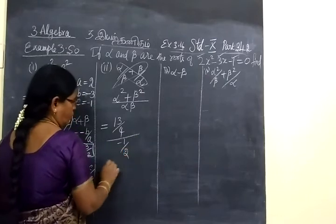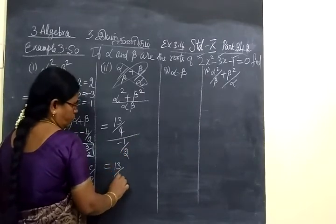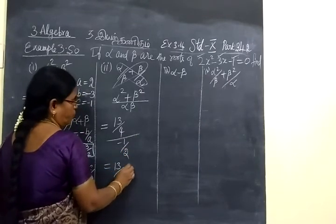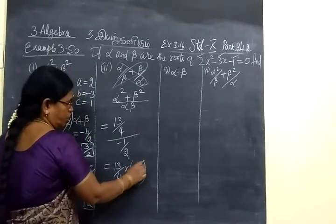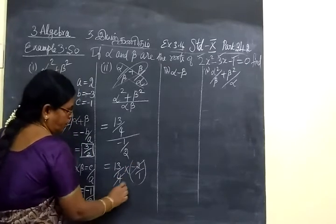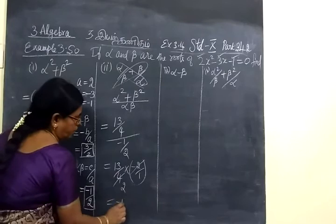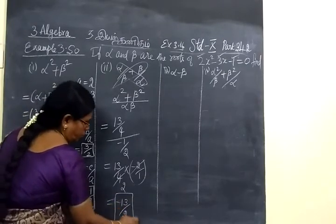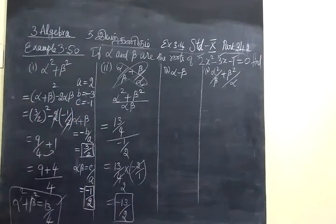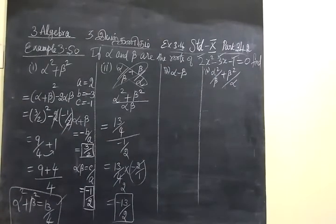Write in reciprocal form: 13 by 4 multiplied by minus 2 by 1, giving minus 13 by 2. So the second answer is minus 13 by 2. Verify the answer — this is correct.